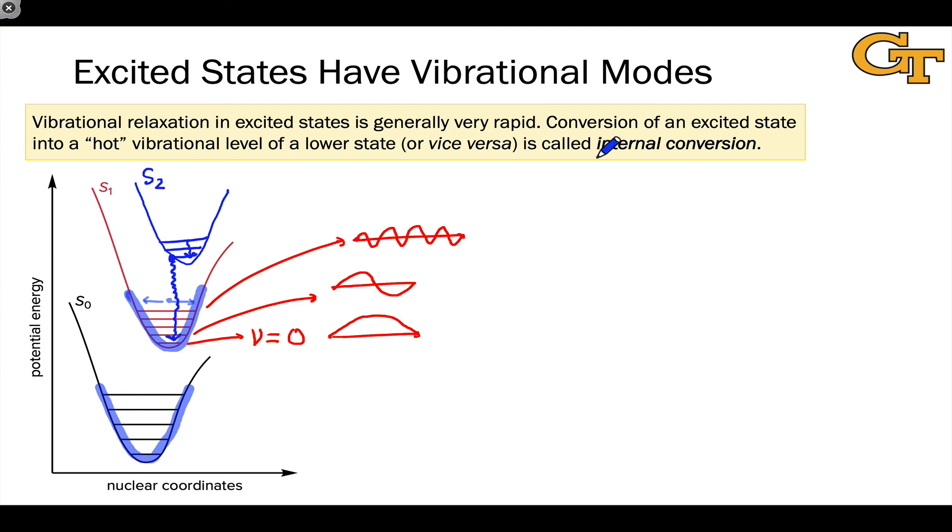S2 becomes S1 and then rapidly relaxes down to the ground vibrational level of S1. This process of the upper singlet state S2 converting to a lower singlet state in a non-radiative way is called internal conversion. And it's an important non-radiative decay process for excited states.